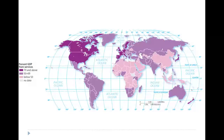Looking at GDP around the world — our gross domestic product — you can see how much money each area brings in through services. North America, Western Europe, Japan, and New Zealand rank at the top, and we consider those the more developed regions of the world. Areas lower in service GDP include Africa and Southwest Asia.